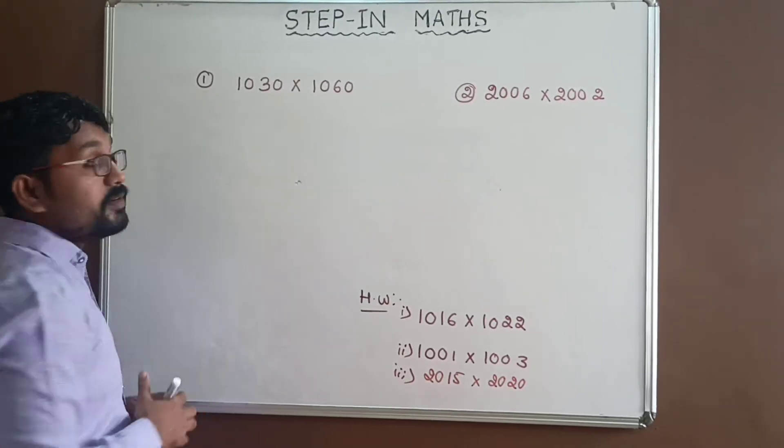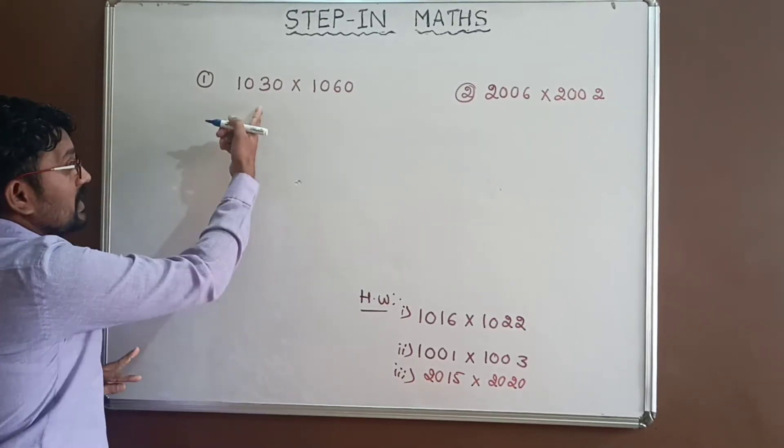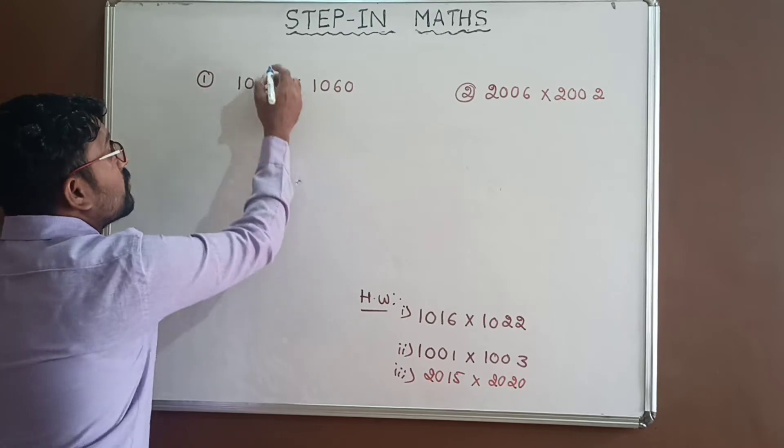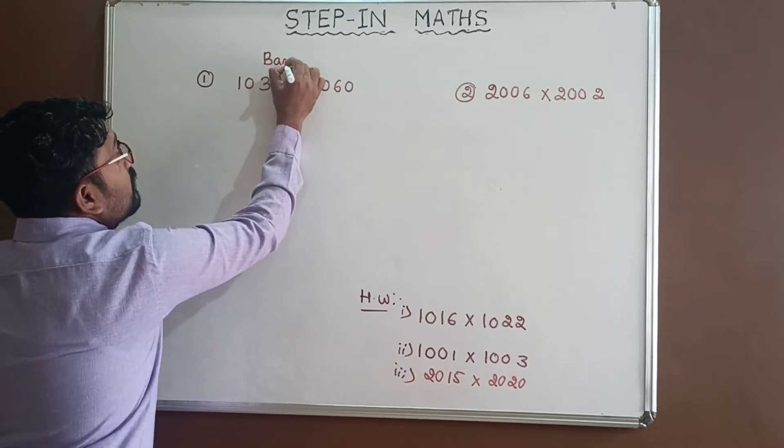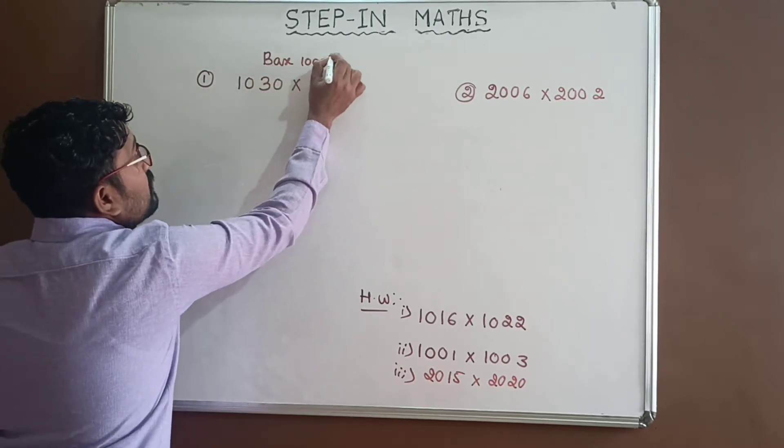How to multiply 1030 into 1060? These two numbers are nearer to 1000, so let us take base as 1000.